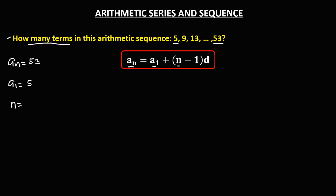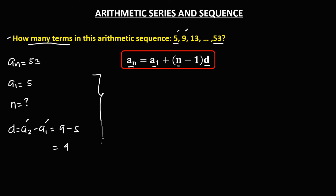Since we're looking for the number of terms, n is the unknown. d is the common difference. We can find d using the formula: a sub 2 minus a sub 1, so that's the second term 9 minus the first term 5. So the common difference is positive 4.